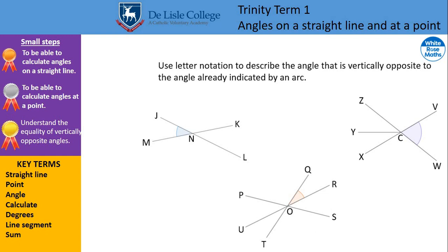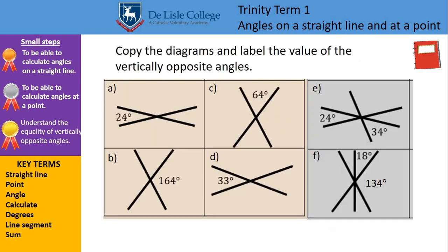So these do now show vertically opposite angles, and I would like you to use letter notation to describe the angle that is vertically opposite to the angle already indicated by an arc. So that arc, that's the shaded region there to show the angle, which ones on these show vertically opposite angles. And again, remember your three-letter notation for angles. On this first one, there are two sort of answers here. It's the same angle but two ways to write it. So we've got L, N, K, or you could write it as K, N, L. Remember, that middle letter is the one where we're looking at for it. And top right one, so angle V, C, W, is the same as X, C, Z, or Z, C, X. It's that whole part there, because it's vertically opposite that. And then on the last one, we should be having U, O, T, or T, O, U as our vertically opposite to Q, O, R.